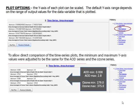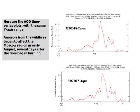To allow direct comparison of the time series plots, the minimum and maximum Y-axis values were adjusted to be the same values for the AOD series and the Ozone series. Then click on Re-Plot. Here are the resulting AOD time series plots with the same Y-axis range.